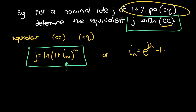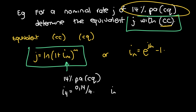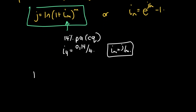The original rate is 14% per annum compounded quarterly. To get i4, it's 0.14 divided by 4 — remember we convert to decimal fraction notation for our formulas, so 14% becomes 0.14. This uses the relationship iM = J/M. Now we have all the information needed to put everything into the formula.